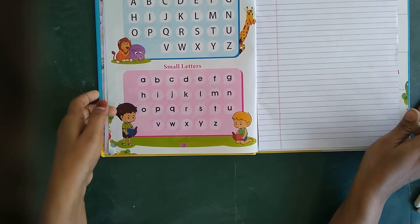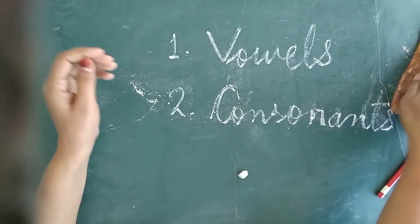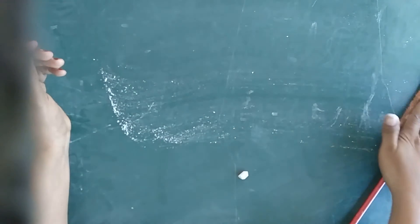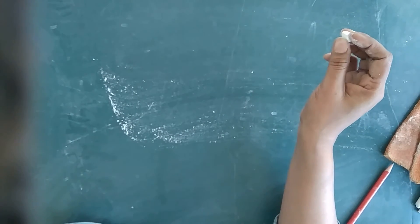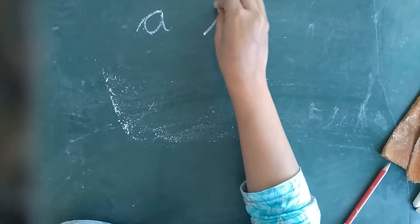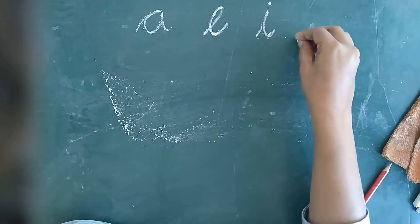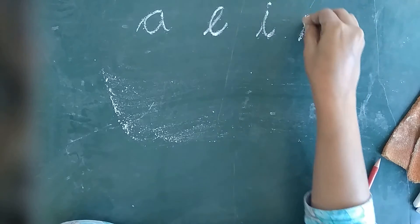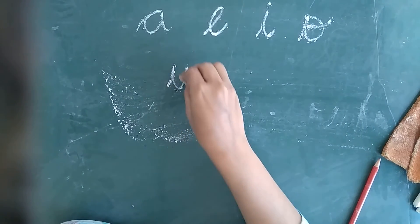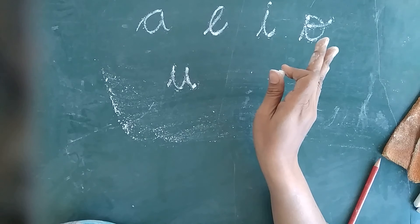How many vowels in alphabet? There are five vowels in English alphabet: A, E, I, O, and U.